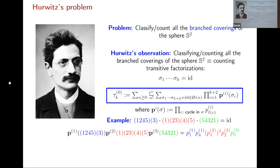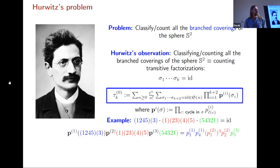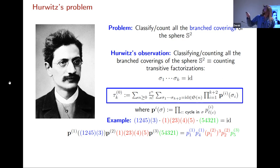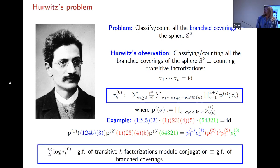These variables p's tell me the cycle structure of each permutation. For instance, the first permutation might have p₁ and p₄ — meaning one cycle of length one and one cycle of length four. The second might be p₁⁴ · p₂ because it has one transposition, and the last has one cycle of length five, so it's p₅. This is a huge generating function with infinitely many variables, but it carries all the information we want.